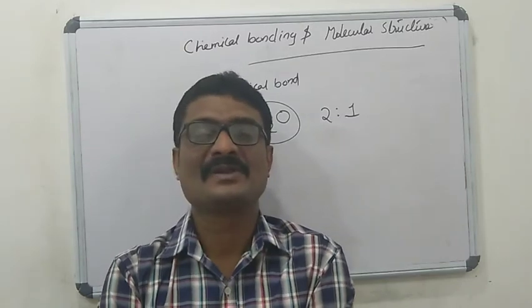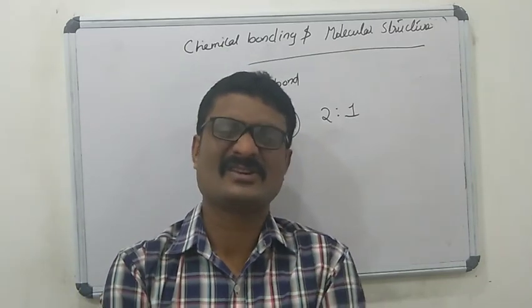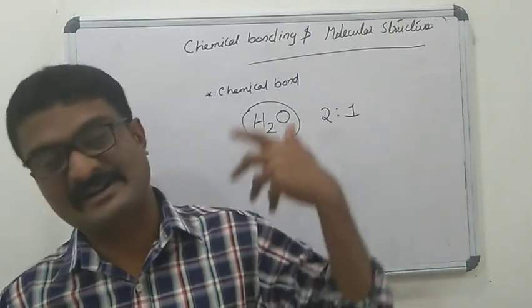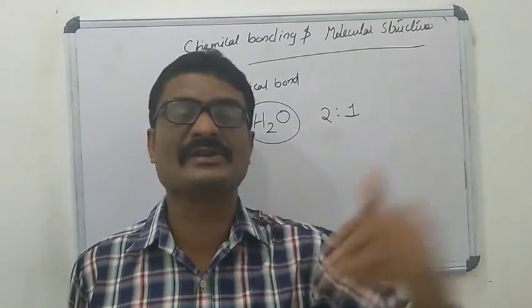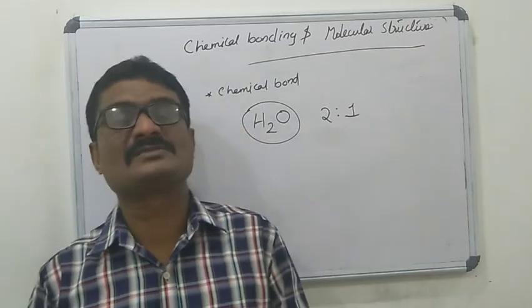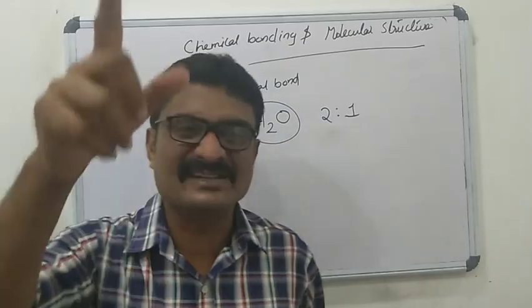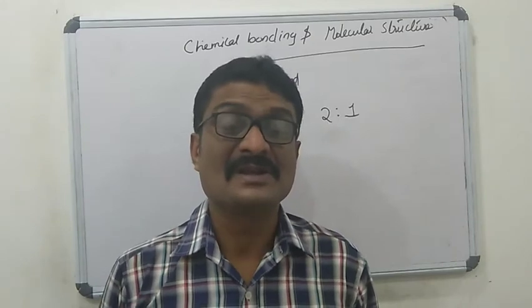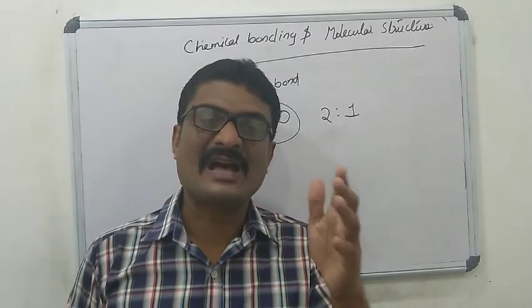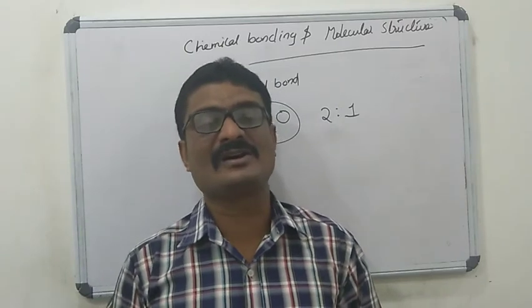And the fourth question: why do molecules possess definite shape? For example, the shape of BeCl2 beryllium chloride is linear. The shape of BF3 is trigonal planar. The shape of methane CH4 is tetrahedral. In this unit, we shall try to answer these questions on the basis of various theories like the Kossel-Lewis approach, valence shell electron pair repulsion theory, valence bond theory, and molecular orbital theory.